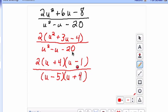Because negative 5 times 4 is a negative 20. Negative 5u and a positive 4u would give you a negative u when you add them together.